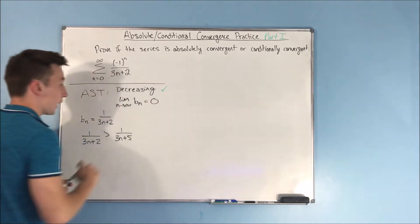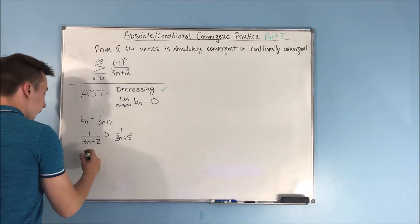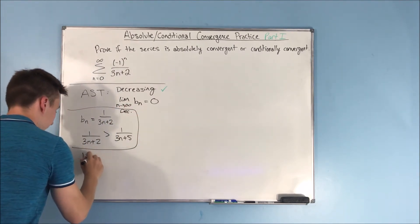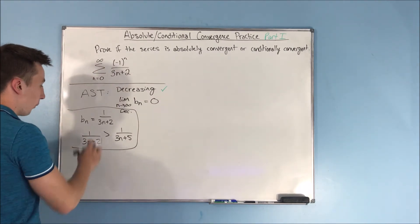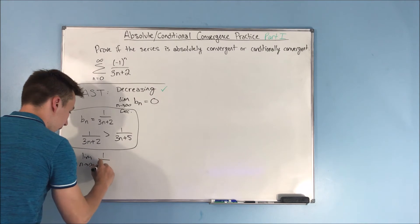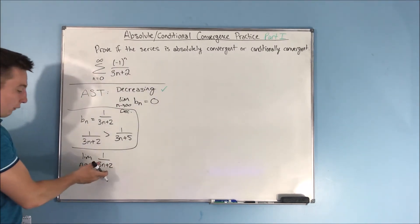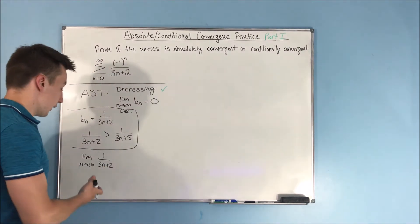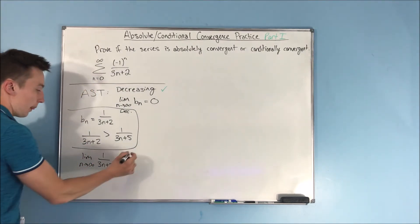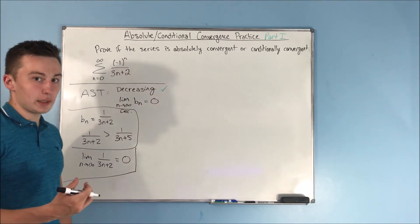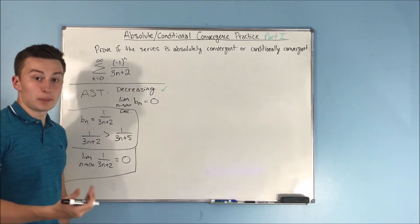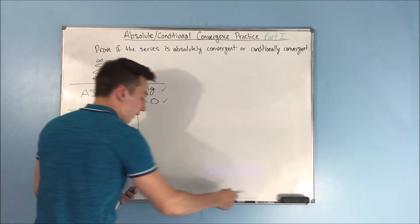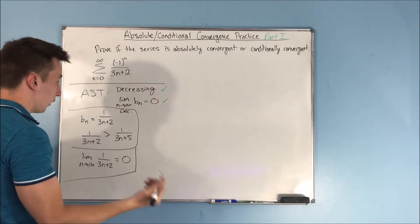Now we take the limit as n approaches infinity of b sub n, which is one over three n plus two. As n approaches infinity, we get an infinitely large denominator, which means the limit equals zero, because an infinitely large denominator makes the fraction infinitesimally small. Both conditions are met, so this series is convergent by the alternating series test.